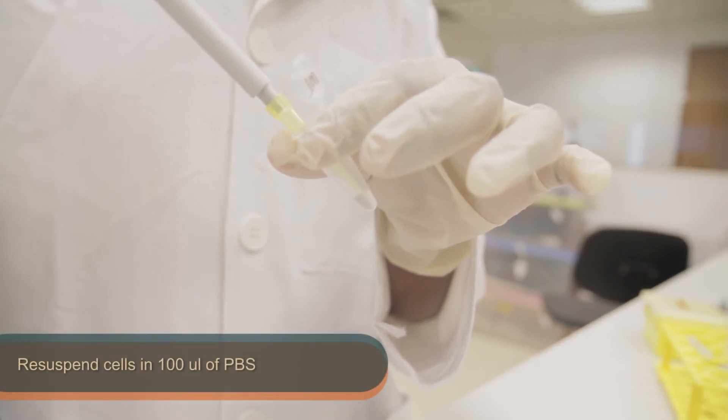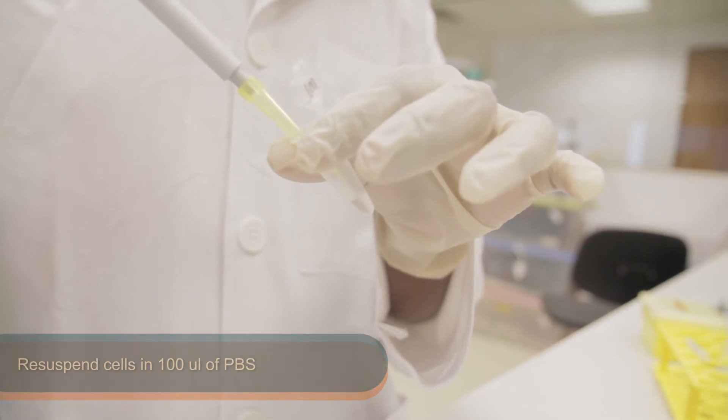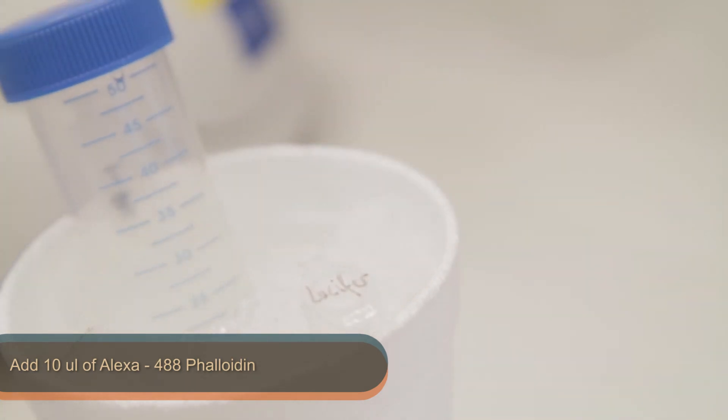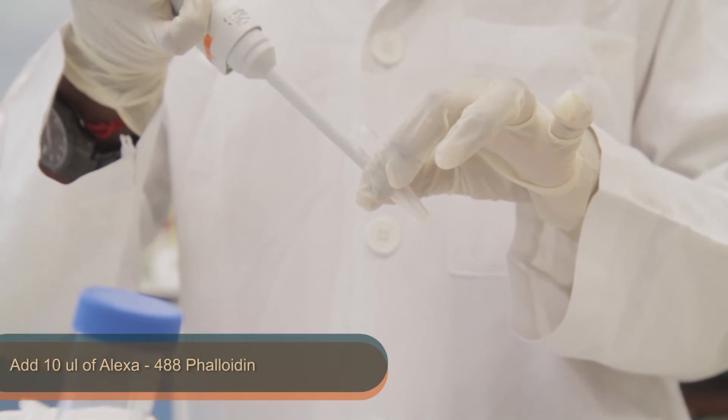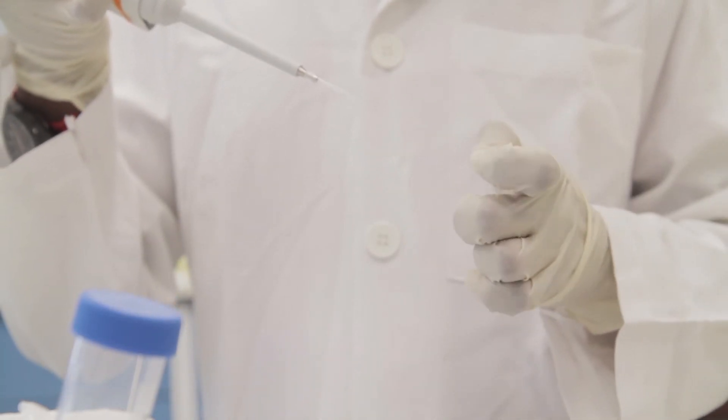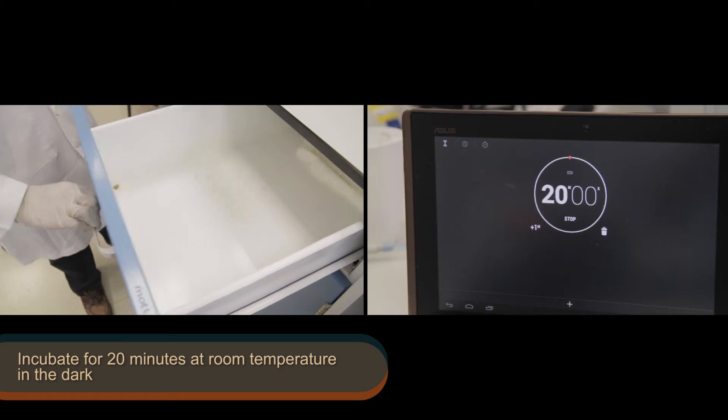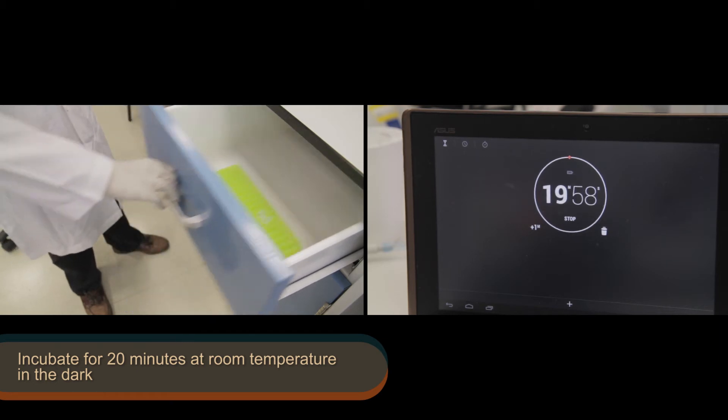Next, re-suspend the cells again in 100 µl PBS and then add 10 µl of Alexa 488 phalloidin. Incubate the samples at room temperature in the dark for 20 minutes.